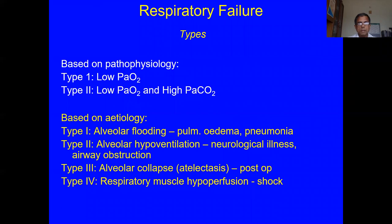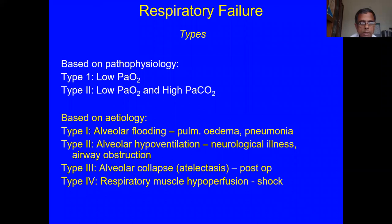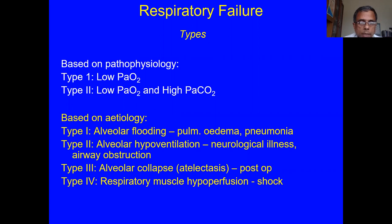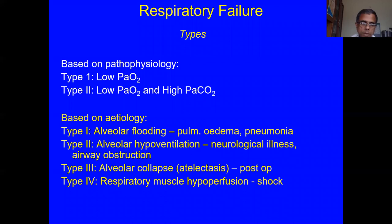Types of respiratory failure: the classical division is Type 1 (hypoxia due to VQ abnormalities) and Type 2 (both gases abnormal: low PaO2 and high CO2). About four or five years ago, Harrison introduced a four-type classification based on etiology: alveolar flooding, alveolar hypoventilation, alveolar collapse (post-operative), and respiratory muscle failure. Harrison's Types 1 and 3 both contribute to the original Type 1 (hypoxic) respiratory failure, while Types 2 and 4 correspond to the classical Type 2 where both gases are abnormal. The classical definition goes by the blood gas abnormality seen; Harrison's is based on pathophysiology.